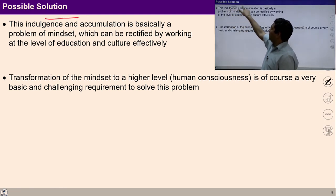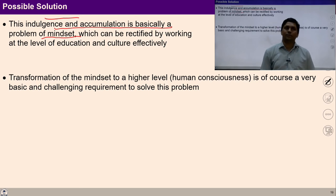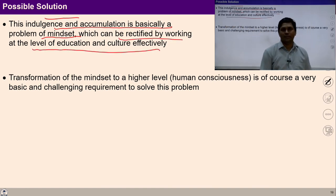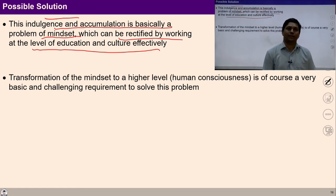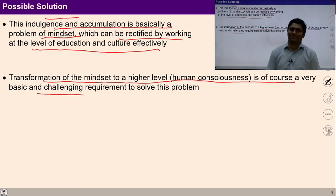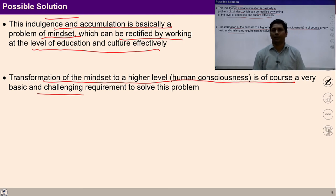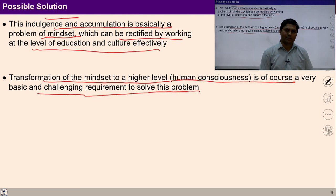What can be the possible solution? Indulgence and accumulation are basically a problem of mindset. It can be rectified if we work at the level of education and culture effectively. If we provide education that helps ensure wisdom in individuals, then this lifestyle of accumulation and indulgence can be minimized. Transformation of the mindset to a higher level is of course the very basic first step — this transformation should be ensured through education and sanskar. It is a challenging requirement, but it is the way to come out of this unwanted lifestyle.